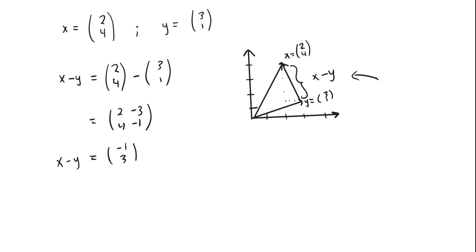Now let's do this using a custom inner product. We have x minus y equal to (-1, 3), which is the vector I have my arrow pointing to. I'm going to redefine our inner product to be this new inner product.